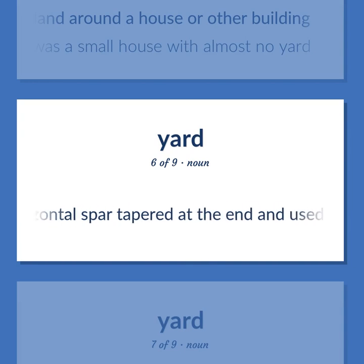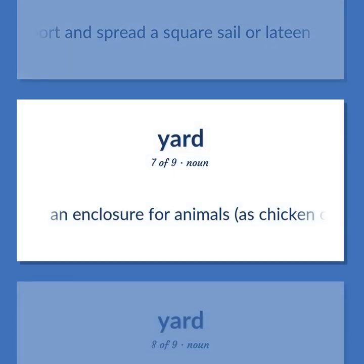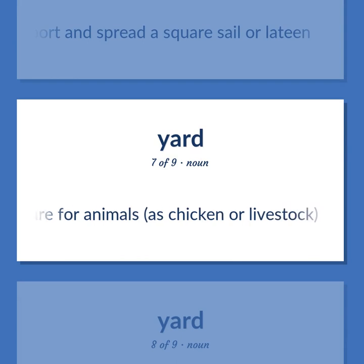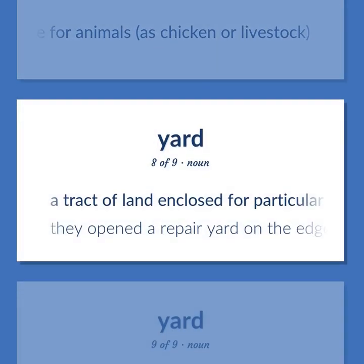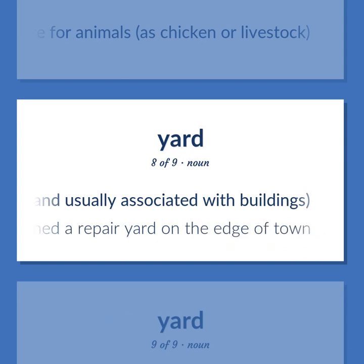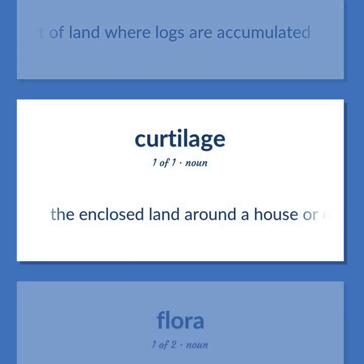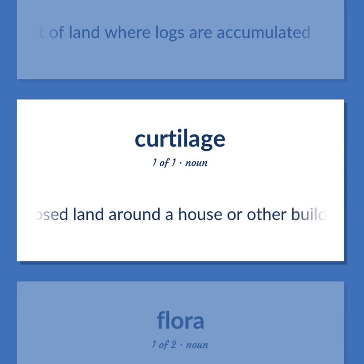A long horizontal spar tapered at the end and used to support and spread a square sail or lateen. An enclosure for animals, as chicken or livestock. A tract of land enclosed for particular activities, sometimes paved and usually associated with buildings: they opened a repair yard on the edge of town. A tract of land where logs are accumulated.